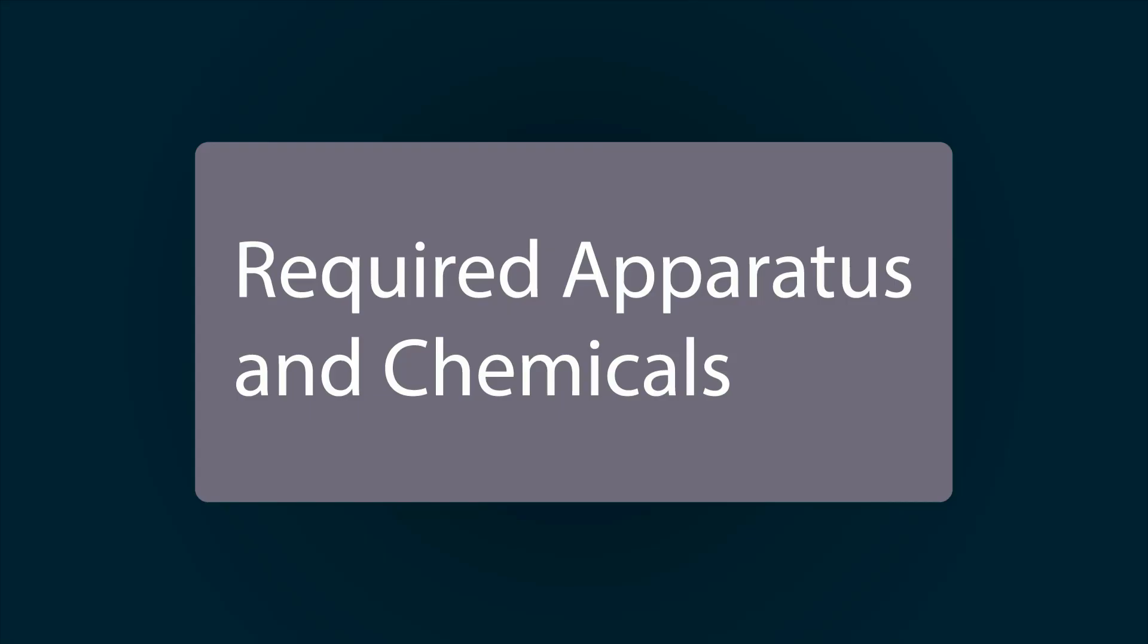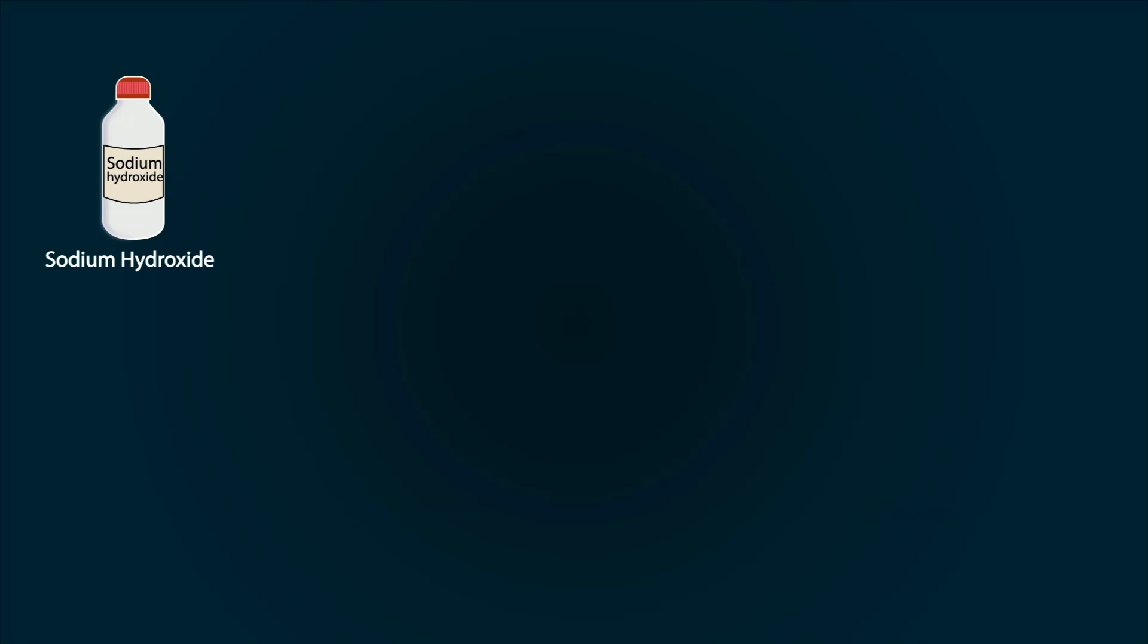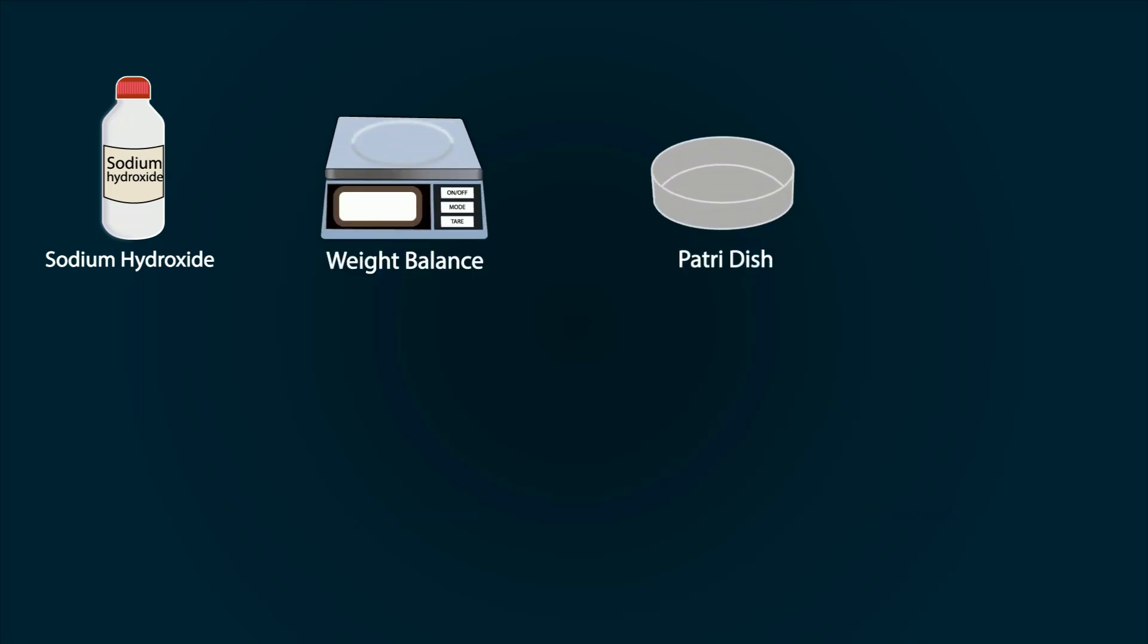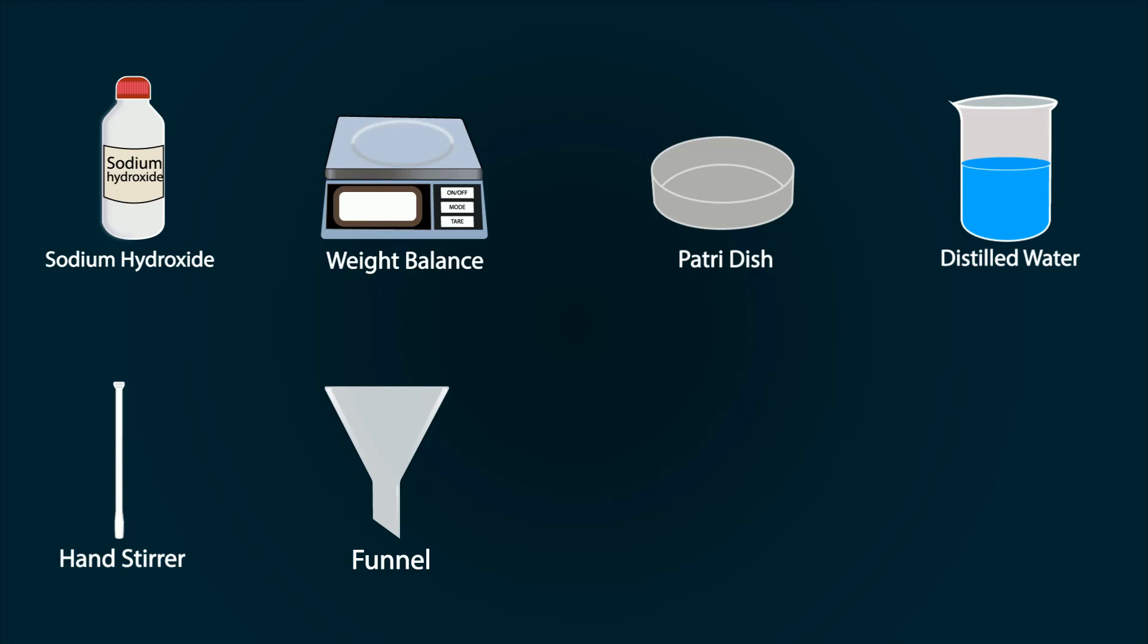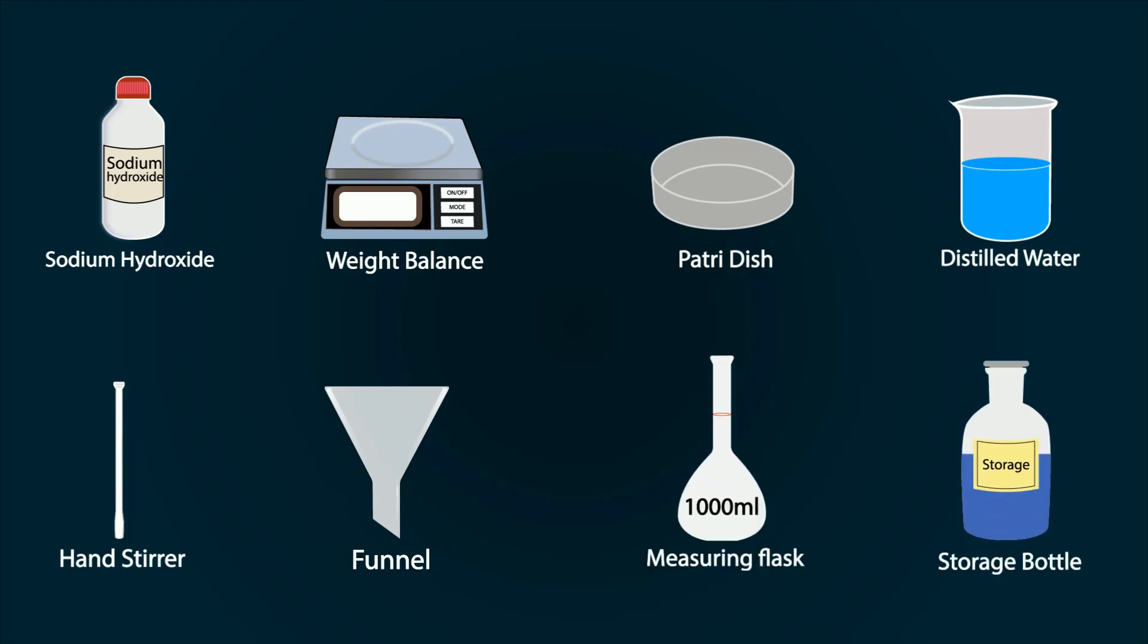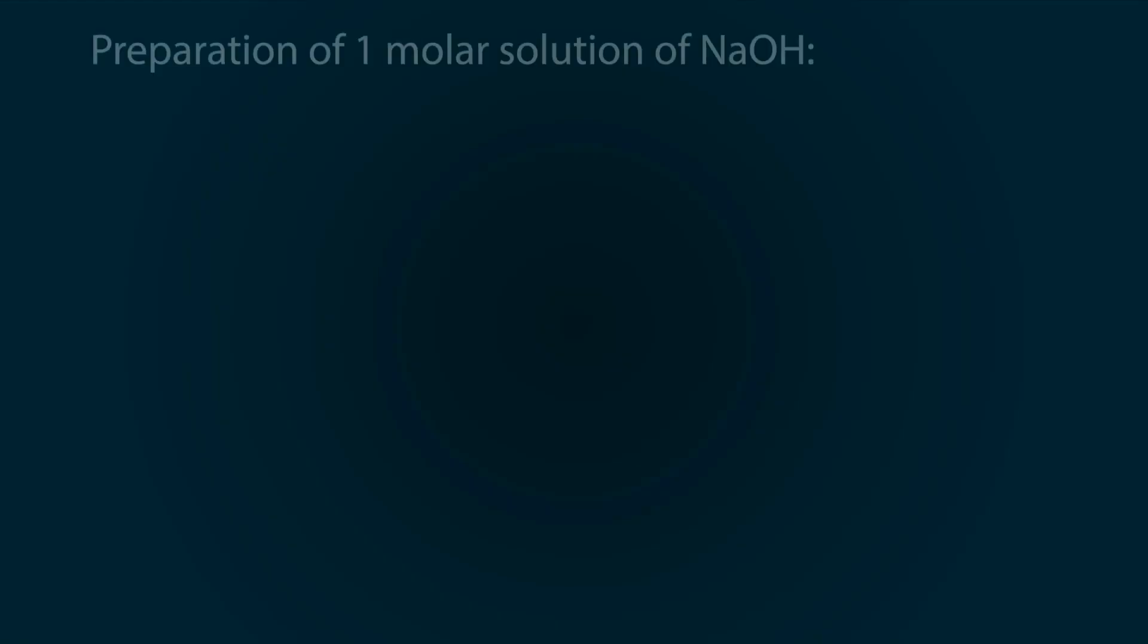The required apparatus and chemicals include sodium hydroxide, weight balance, petri dish, distilled water in a beaker, hand stirrer, funnel, measuring flask of 1000 ml, and a storage tank.